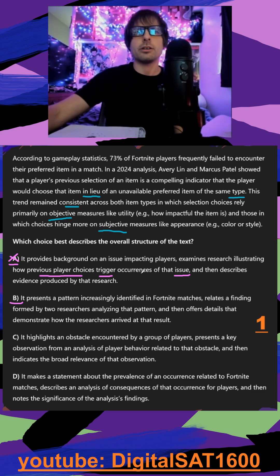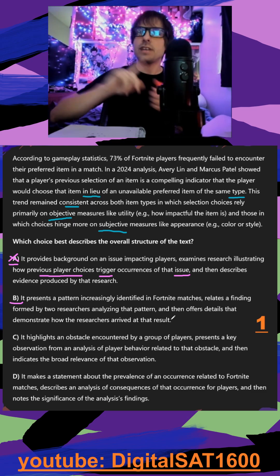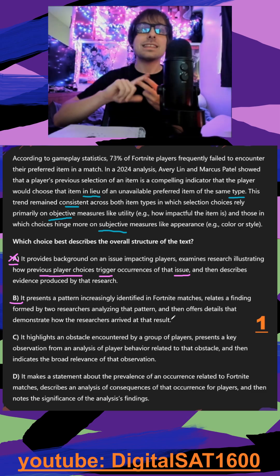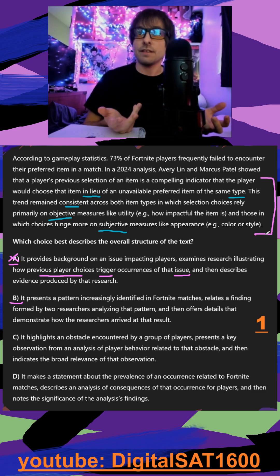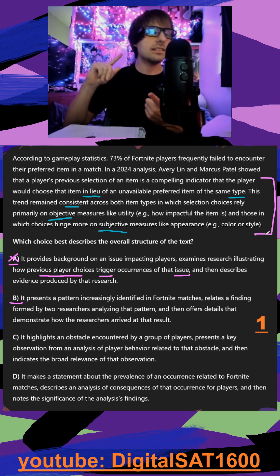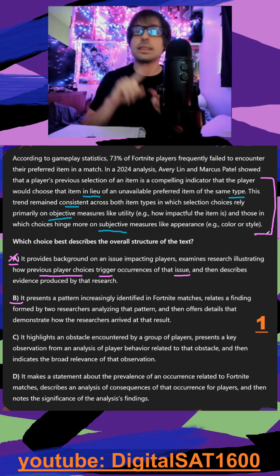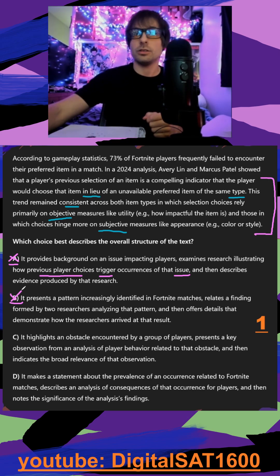In B, it presents a pattern increasingly identified in Fortnite matches — true. It relates a finding formed by two researchers analyzing that pattern, and then offers details that demonstrate how the researchers arrived at that result. That's tricky. We have an aim, what they were looking for, the methodology, how they arrived at the results — but this is all their results. They give us everything they found, the patterns they discovered, but we don't know how they arrived there. What they could have included is like these researchers analyzed 100 players through a thousand matches to discover this compelling indicator. So B has no methodology — not going to be correct.